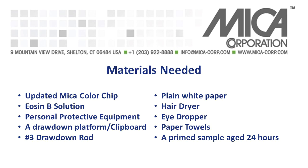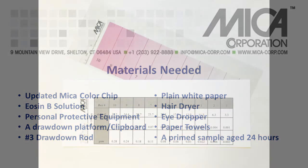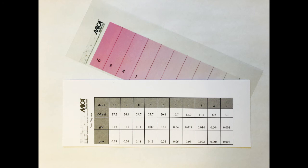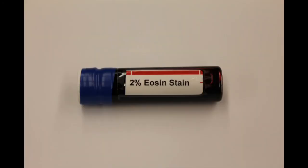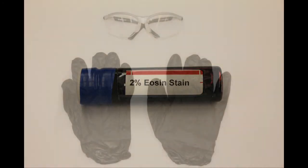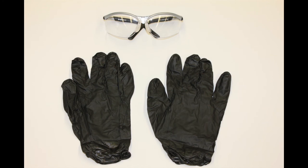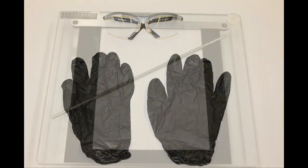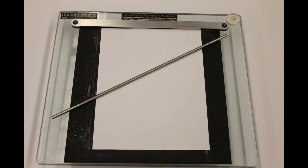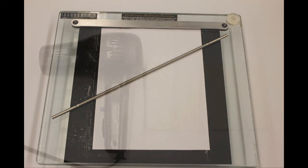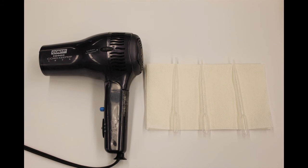For this procedure you will need an updated microcolor chip, ES&B solution, personal protective equipment, a drawdown platform or clipboard, a number 3 drawdown rod, a sheet of plain white paper, a hair dryer, an eye dropper, and paper towels.